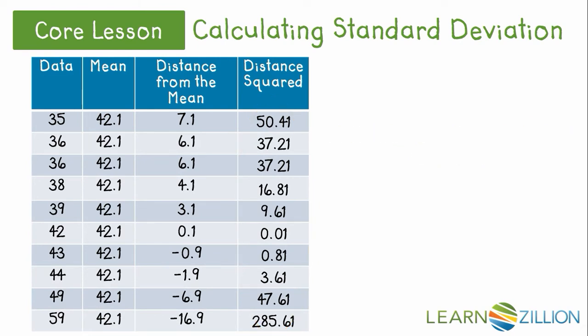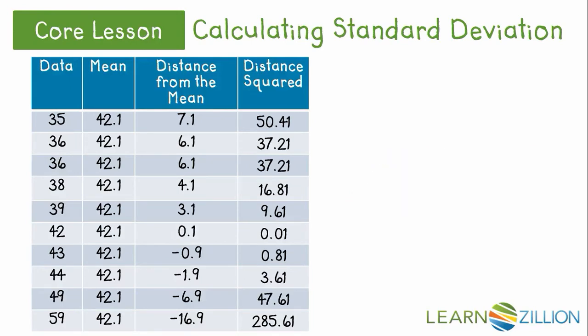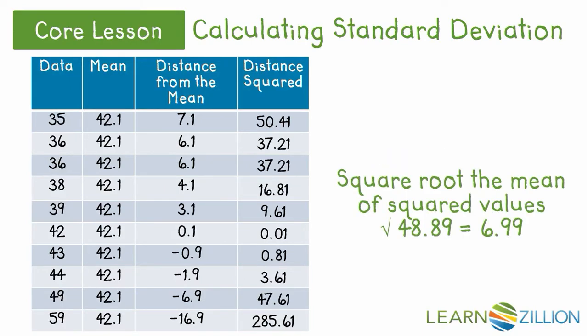Next, find the mean of the square distances by dividing the sum by 10, which gives me 48.89. Finally, take the square root of 48.89, which is 6.99.